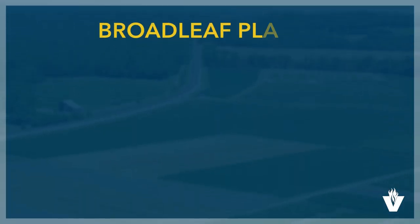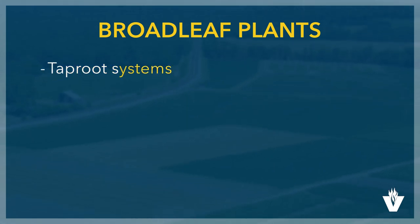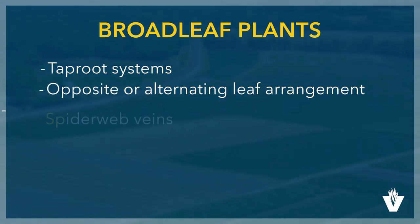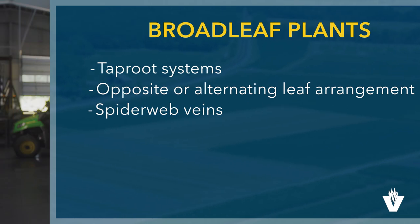In summary, broadleaf plants have taproot systems, either opposite or alternate leaf arrangements, and leaflet veins that have a spiderweb look. This should help you identify broadleaf plants so you can determine the best way to manage them. To learn more, look at our other videos on agribusiness.